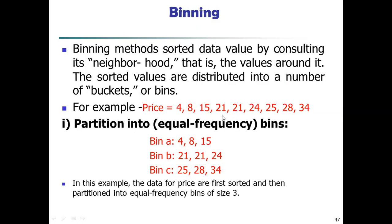So bin 1, bin 2, and bin 3. The first three numbers go in the first bin: 4, 8, 15. Second three numbers go in the second bin: 21, 21, 24. The last three numbers go in the third bin: 25, 28, 34. Note that 21 appears two times — no need to delete it, keep it as is. Data for the price are sorted, then partitioned into equal frequency bins of size 3.